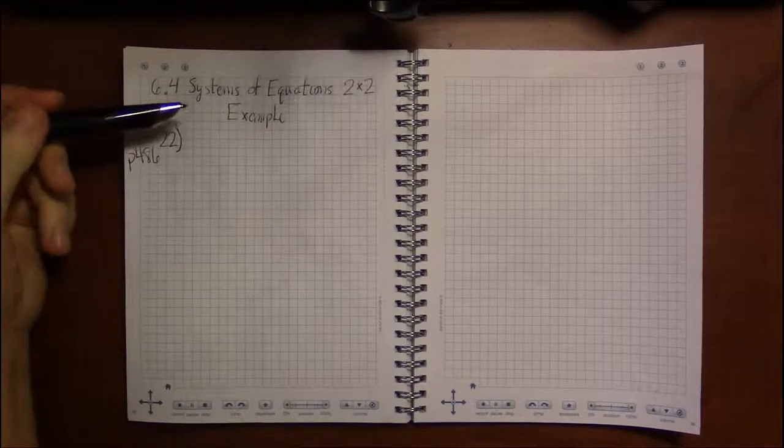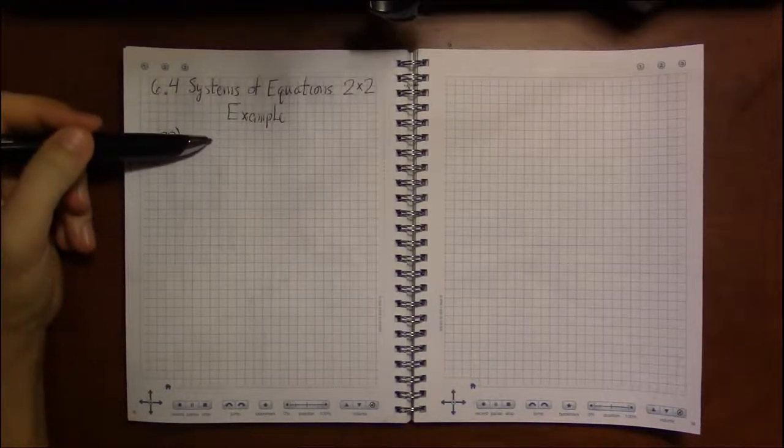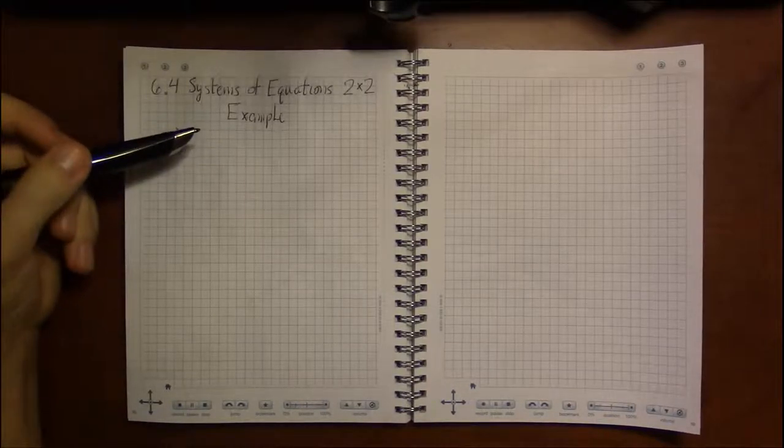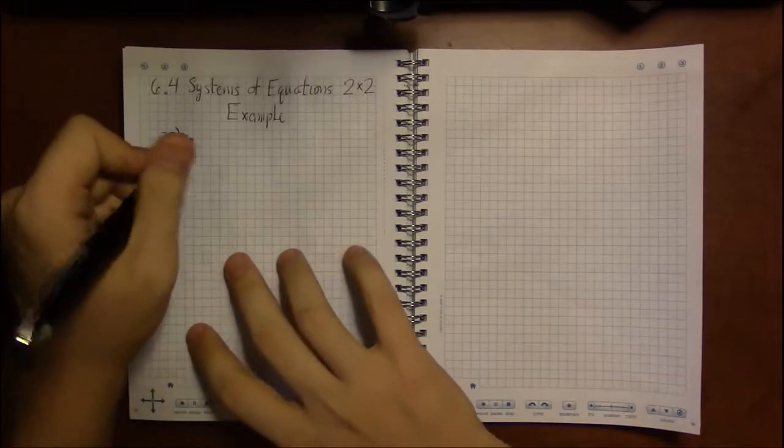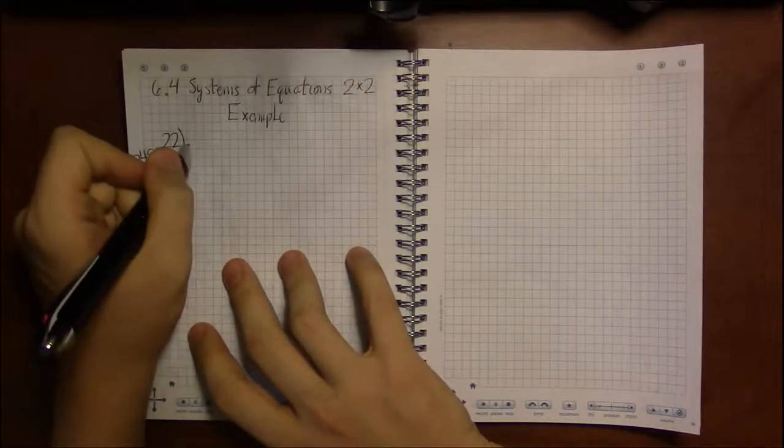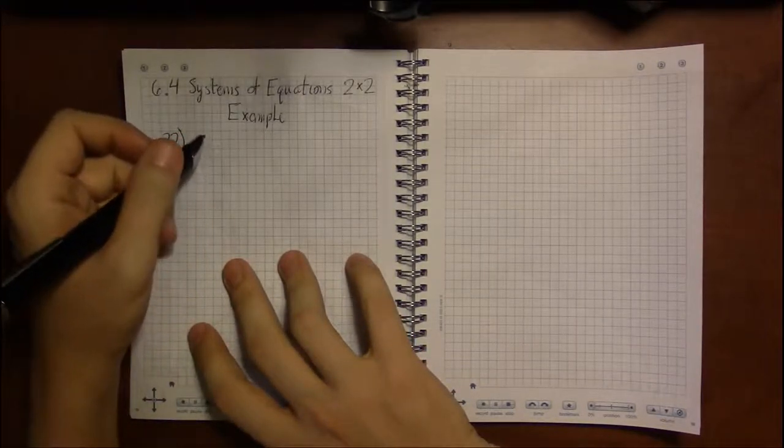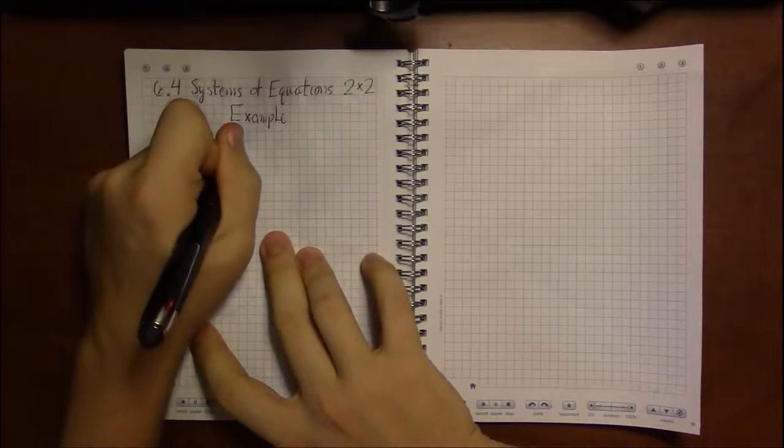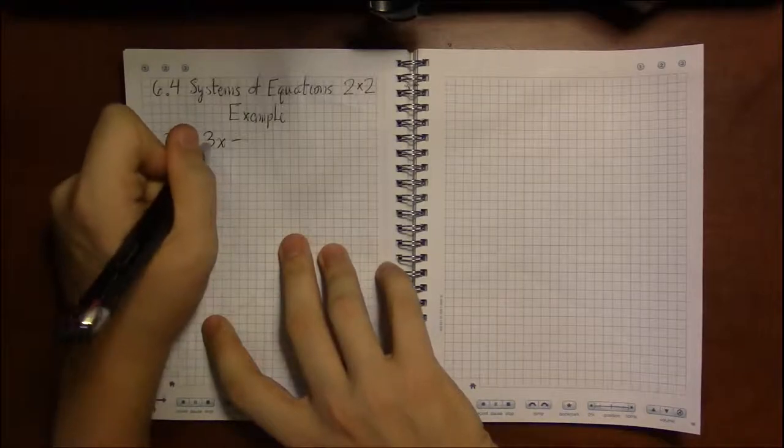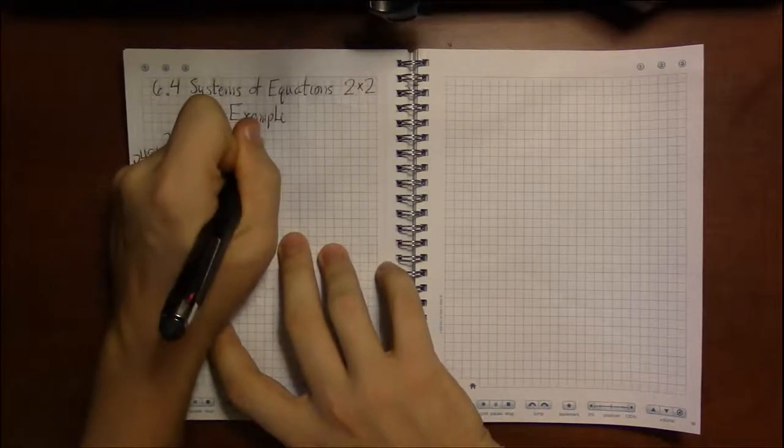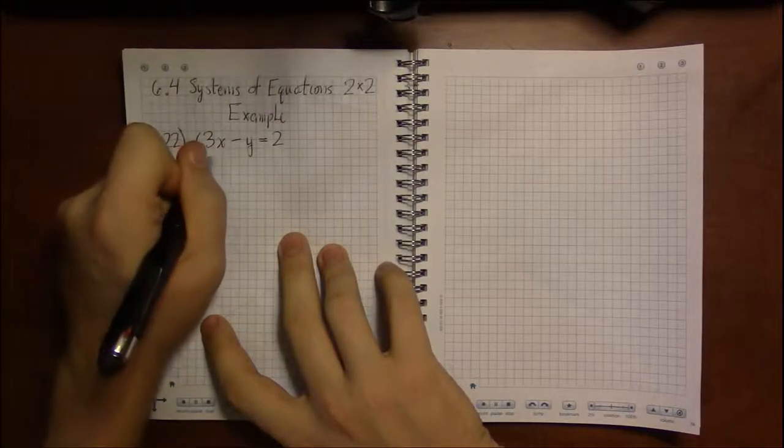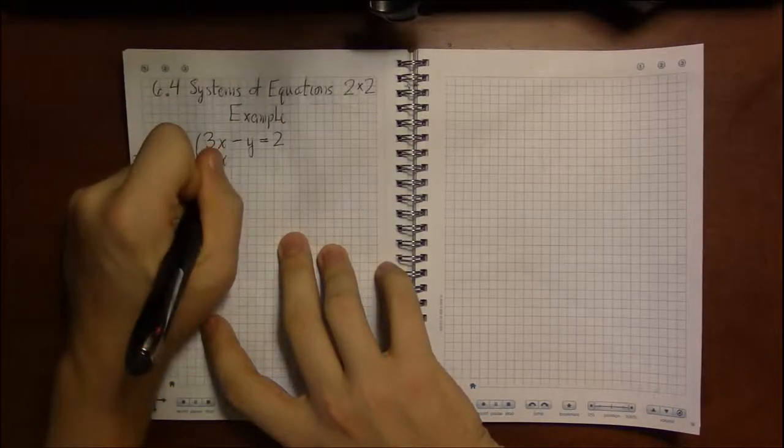So I'm going to be focusing on the kind of more exceptional cases: the inconsistent or no solution, and dependent or infinitely many solutions. So let's look at problem 22, where we have the first equation being 3x - y = 2 and the second equation being 9x - 3y = 6.